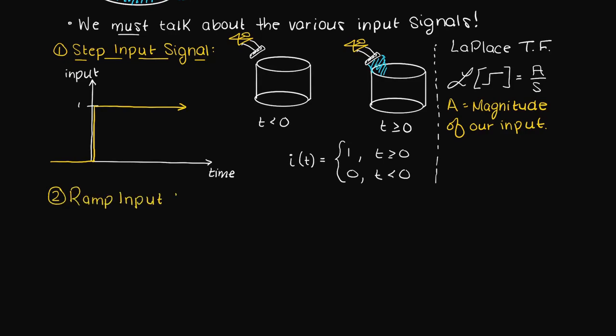Next we have the ramp input. With this input the signal will progressively grow with time, which is where it gets its name, it looks like a ramp. Also note that this ramp is going to have some constant slope.